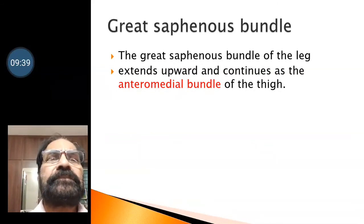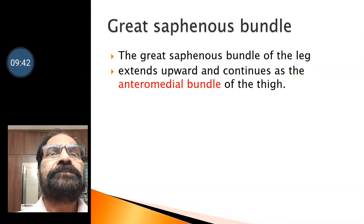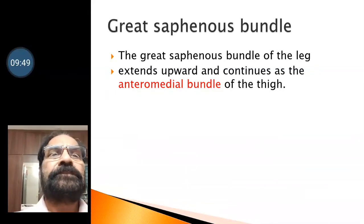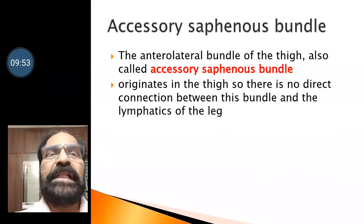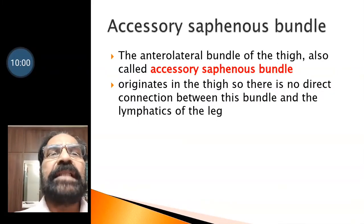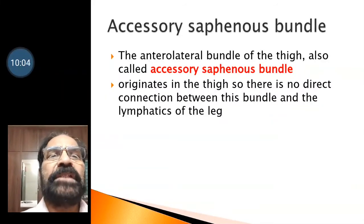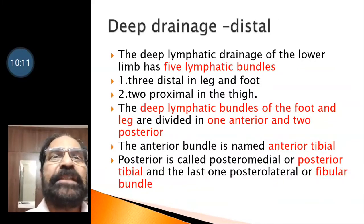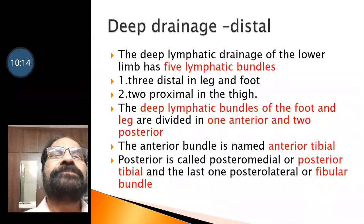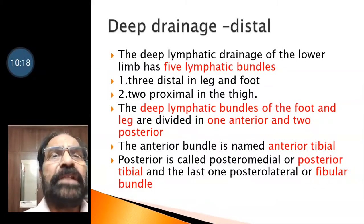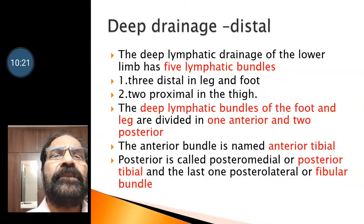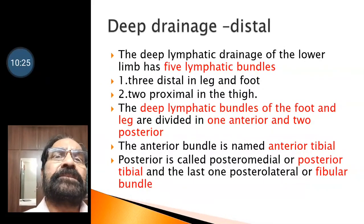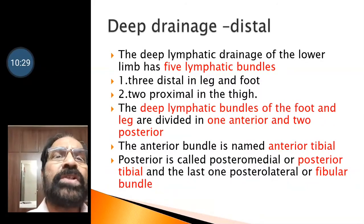The great saphenous bundle of the leg extends upwards and continues as the anterior medial bundle of the thigh. There is also an anterior lateral bundle, also called the accessory saphenous bundle, which originates in the thigh. For deep lymphatic drainage, the lower limb has five lymphatic bundles: three distal in the leg and foot, and two proximal in the thigh.